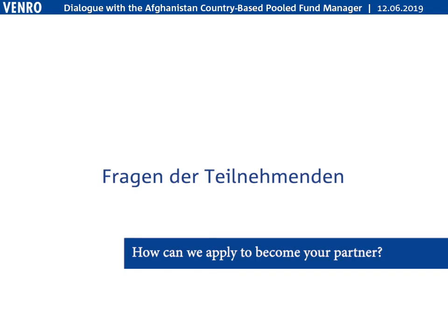We then issue you an access password to the GMS — the Grant Management System used by all country-based pool funds. Everything is electronic. Getting into the GMS enables you to complete an internal partner capacity assessment checklist, where we ask for annual reports, audit reports for the last two years, and other information about your program management capacity. After assessment, partners are ranked as low risk, medium risk, high risk, or ineligible for the next six months.